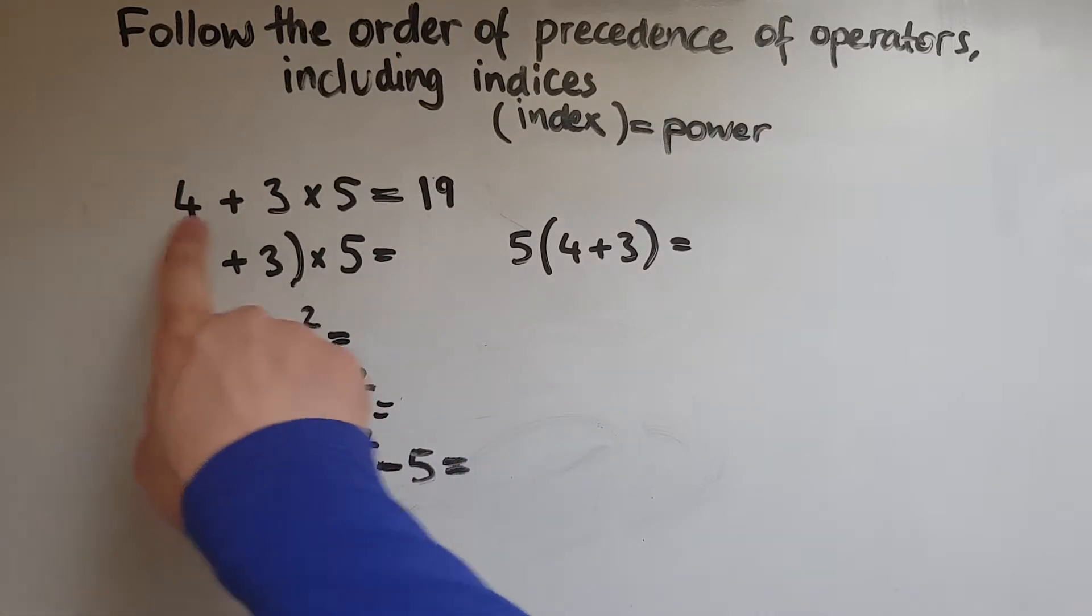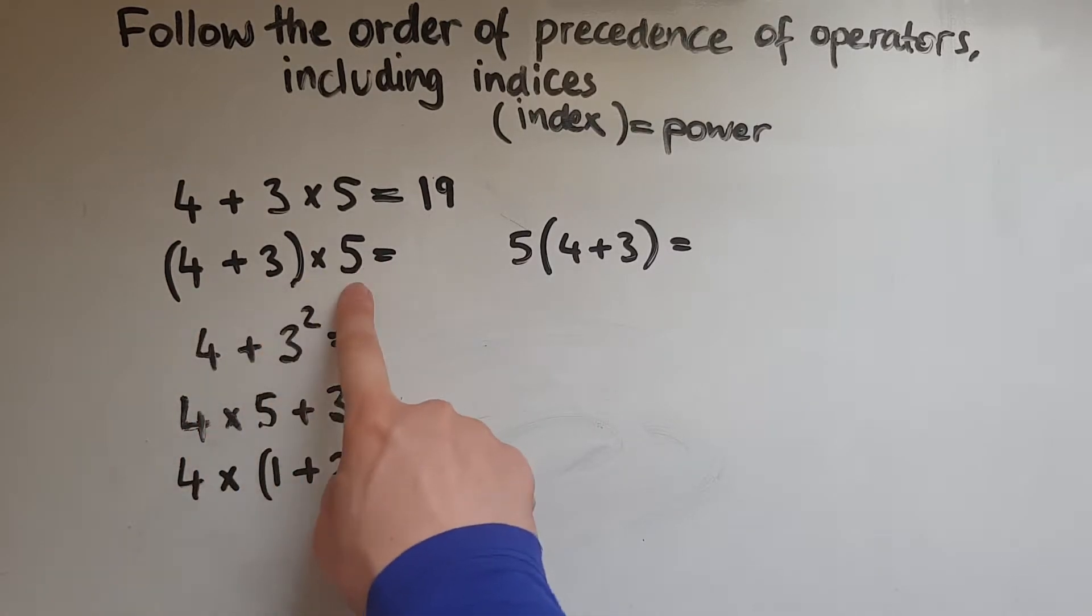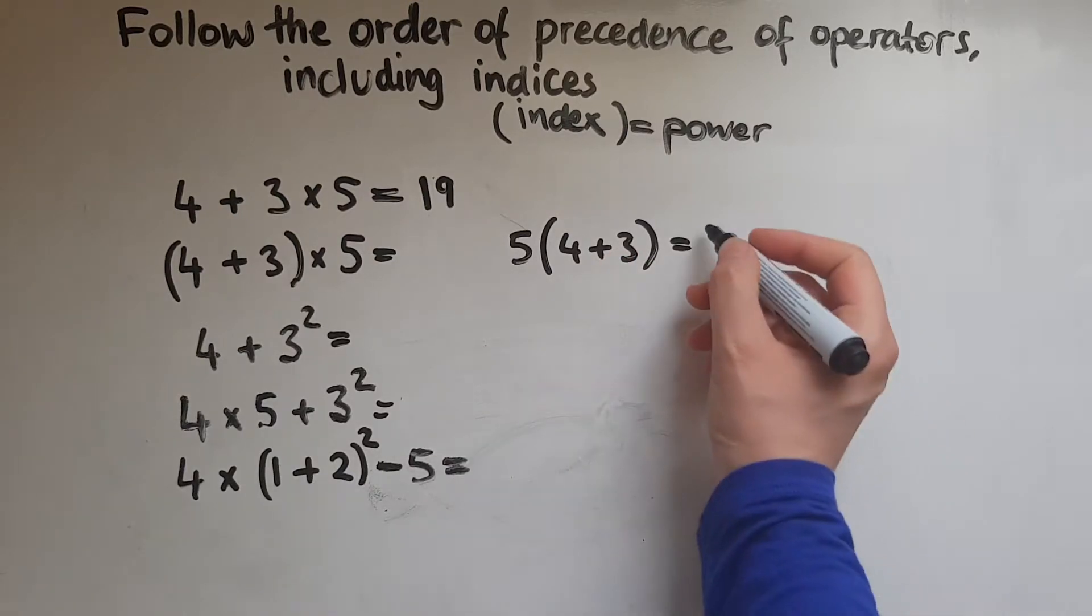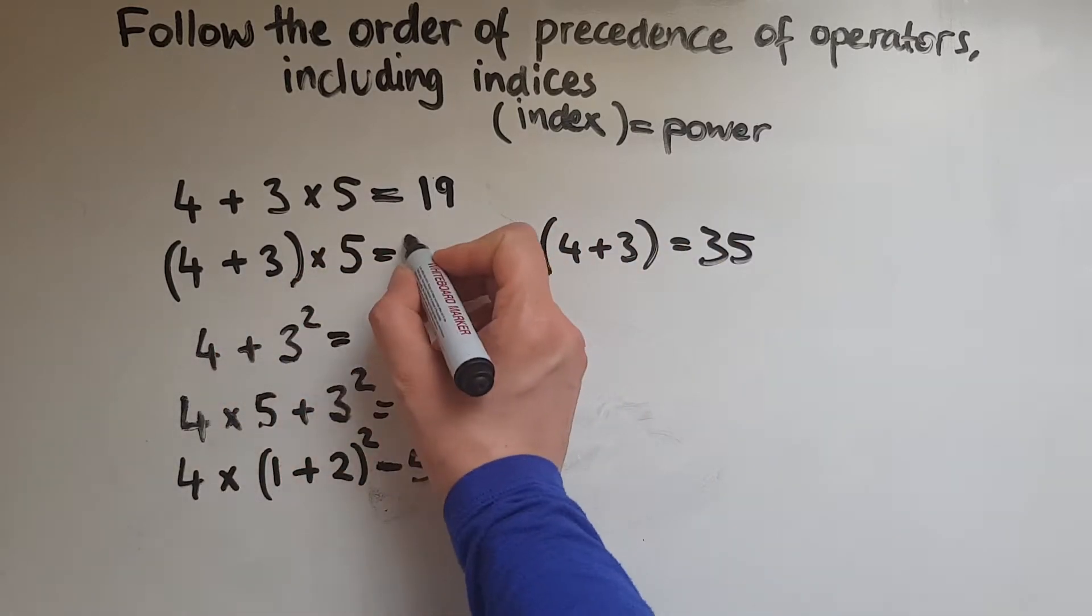Now here we've got the same numbers, but we've got some brackets around this. So 4 add 3 is 7. So 5 lots of 7, which is the same as this one here, 5 lots of 4 plus 3. We've got to look at what is within the brackets first. So 4 add 3 gives us 7, 5 lots of 7 is 35.